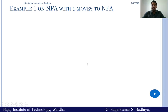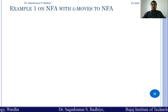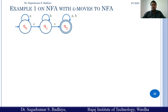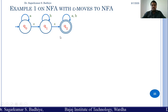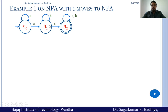Good morning and welcome back to the next class on theory of computation. In this class we are going to look at an example on conversion of NFA with epsilon move to NFA. The NFA with epsilon move is given by the transition diagram where there is an epsilon transition from q0 to q1 and from q1 to q2.